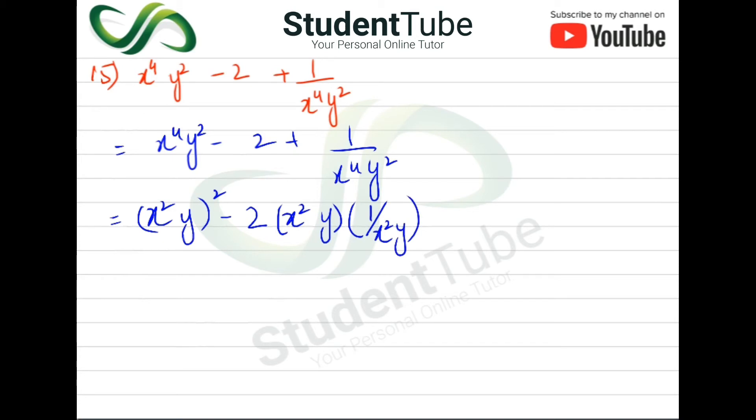Then plus - here is 1 over x⁴, so 2 has come, and there is nothing in y, and the whole square will come.